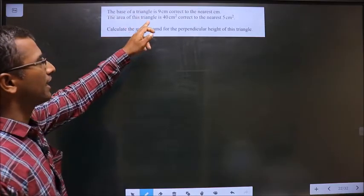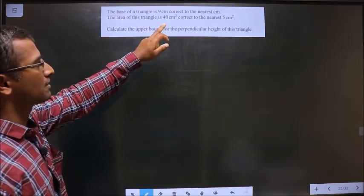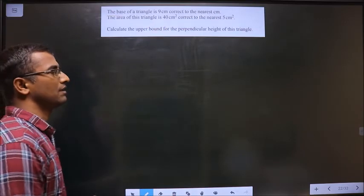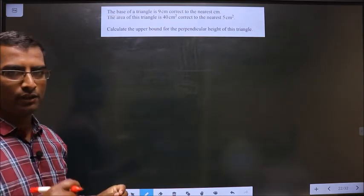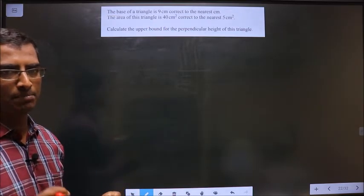The base of a triangle is 9 cm, correct to the nearest centimeter. So first let us write lower and upper bound for the given number.